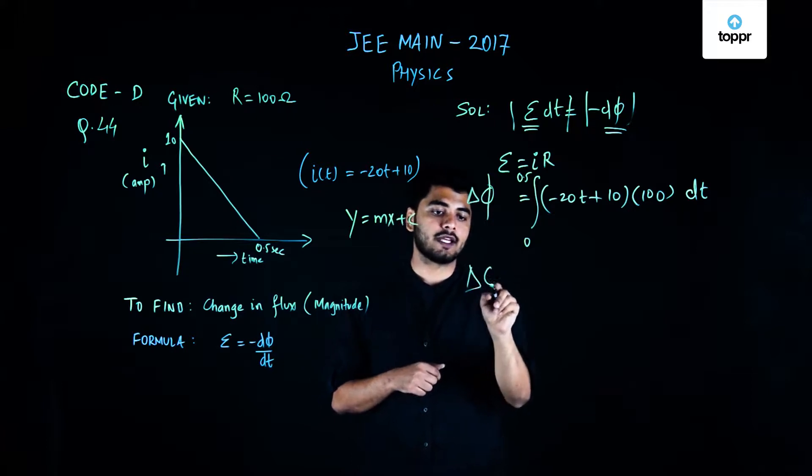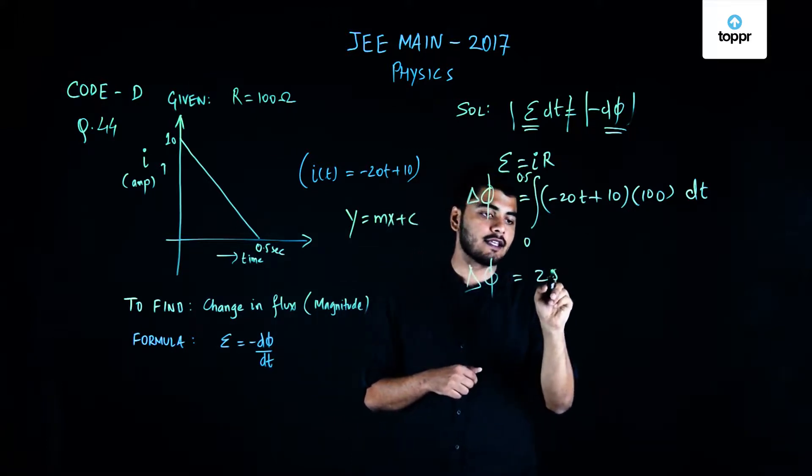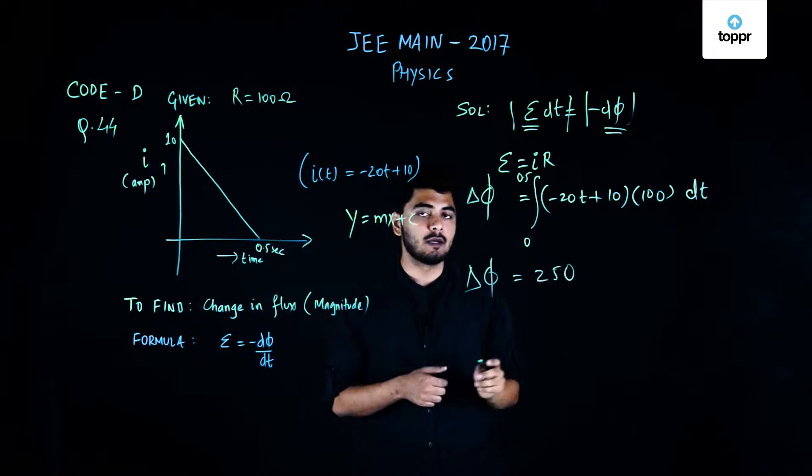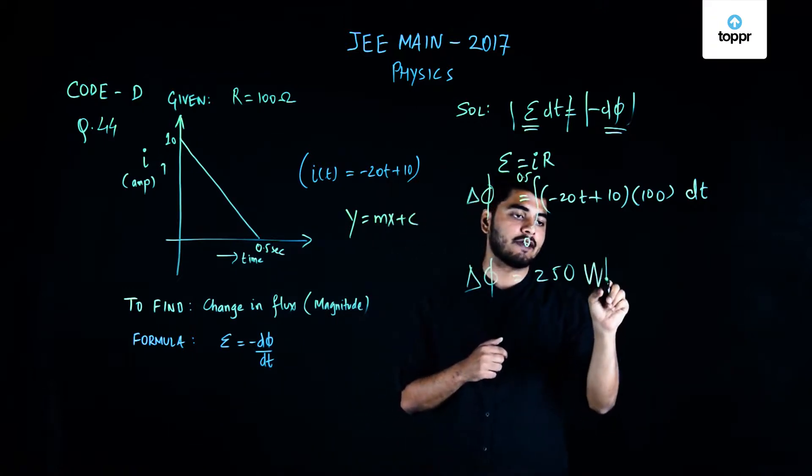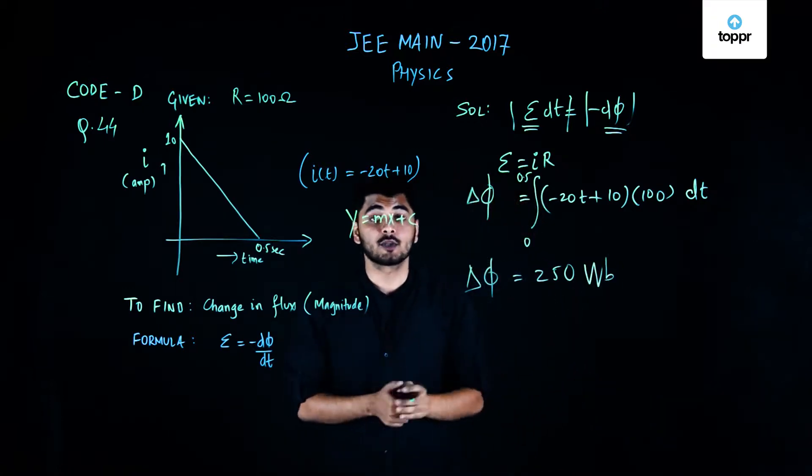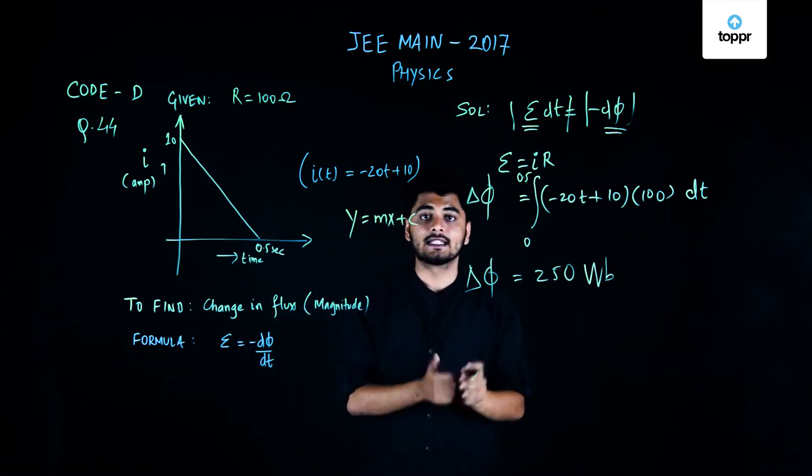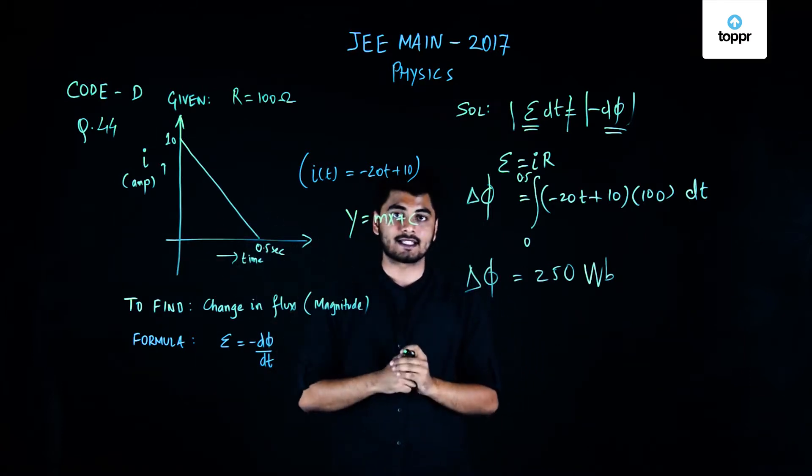So my delta phi comes out to be 250. If I solve this—I'm not doing the calculations right now but if you solve it—it will come out to be 250 Weber. So this is how you should calculate the value of change in flux if such situations come.